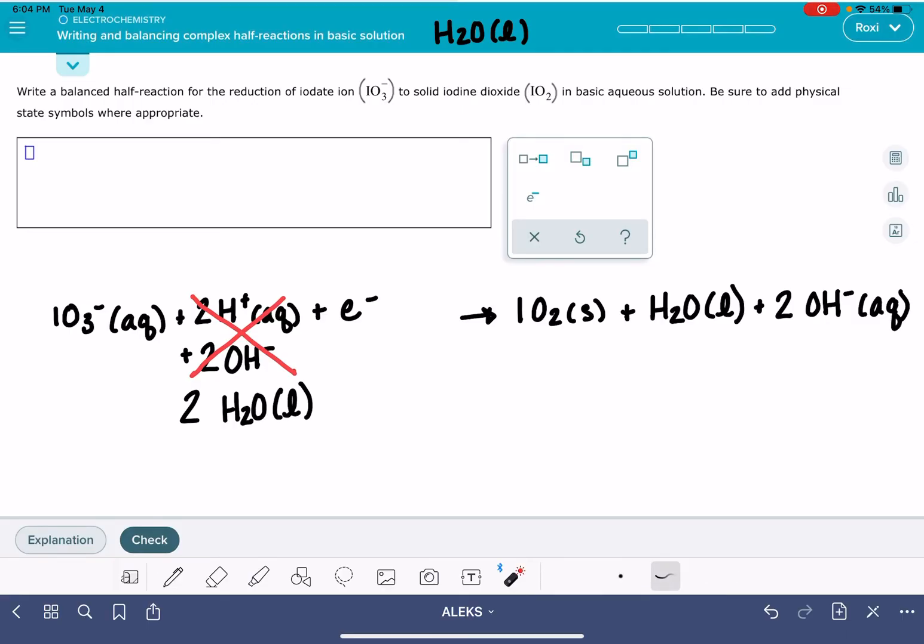The last thing you want to do is double check - whenever you're making water in these equations, you want to check and see if you can simplify. We have water on both the left-hand side and the right-hand side. That means we can remove one of those water molecules from each side. We can take one water molecule away from the left and one from the right.